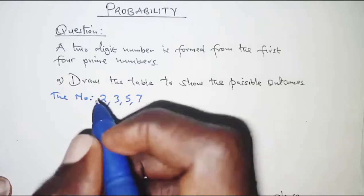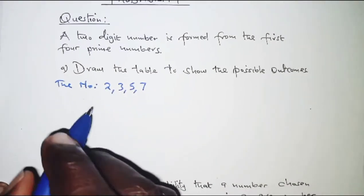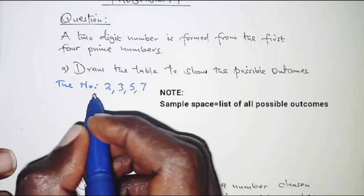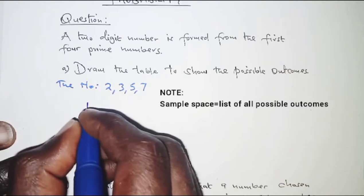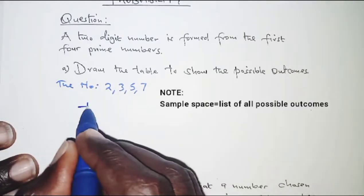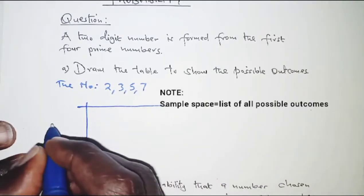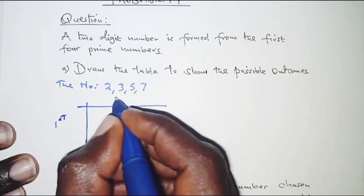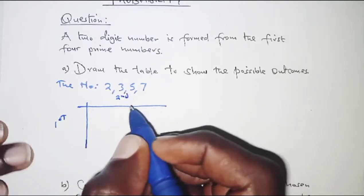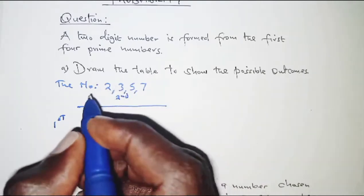So we are going to form the sample space and we are going to do that from the table. So we have the first number and the second number or rather the first digit and the second digit.